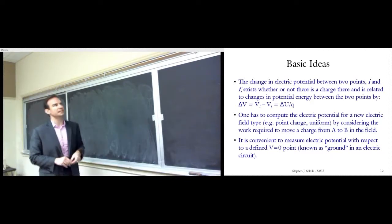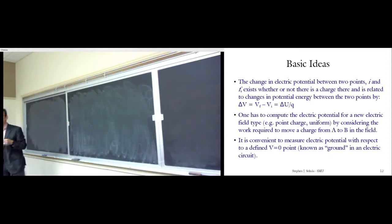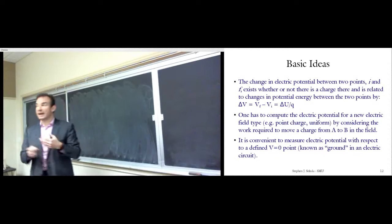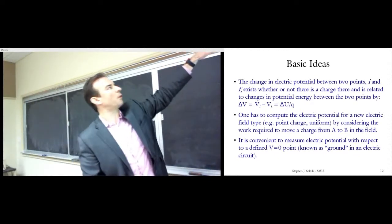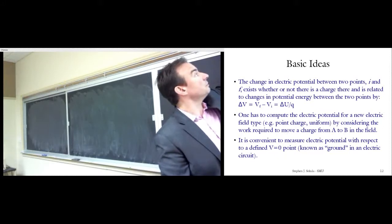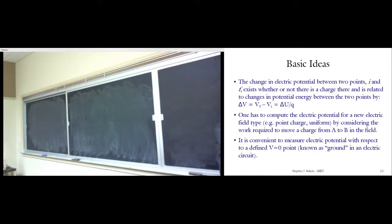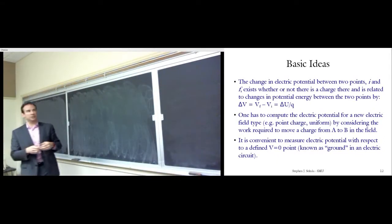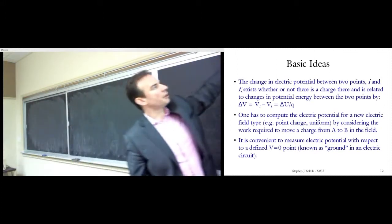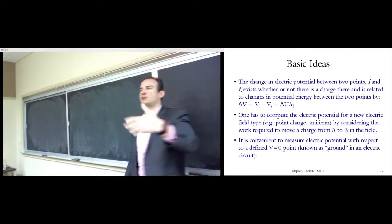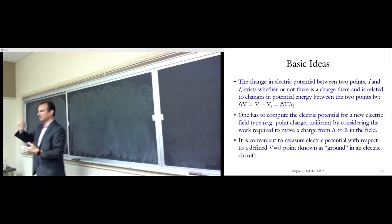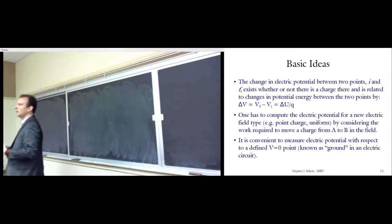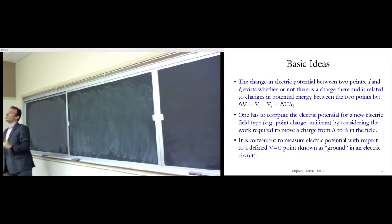That's why everything's quoted in volts — we don't know how many charges this socket's going to have to move to do work, but we do know its potential to do work per unit charge. The change in electric potential between two points I and F exists whether or not there is a charge there. It's related to changes in potential energy by a straightforward algebraic equation: delta V equals V_final minus V_initial equals (U_final minus U_initial) divided by the charge moving through the potential energy difference.